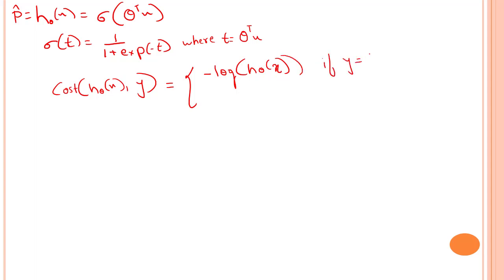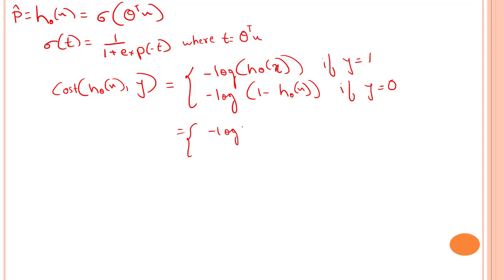That is minus log of h(θ, x) if y equals 1, or else minus log of 1 minus h(θ, x) if y equals 0. Or we can write it in shorthand as: minus log(p) if y equals 1, or minus log(1 minus p) if y equals 0.